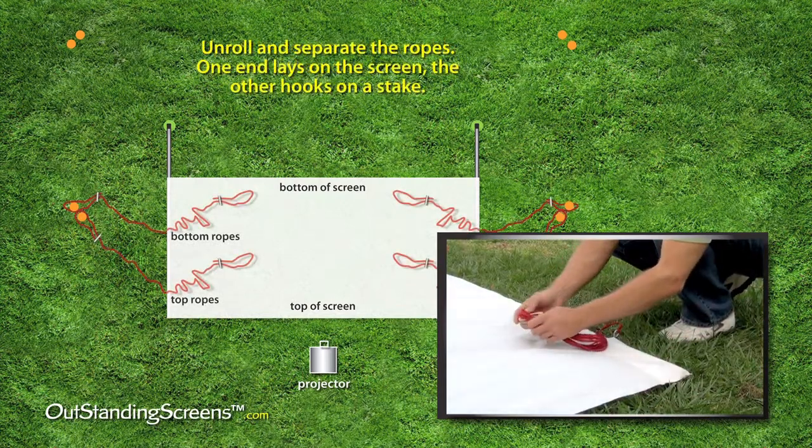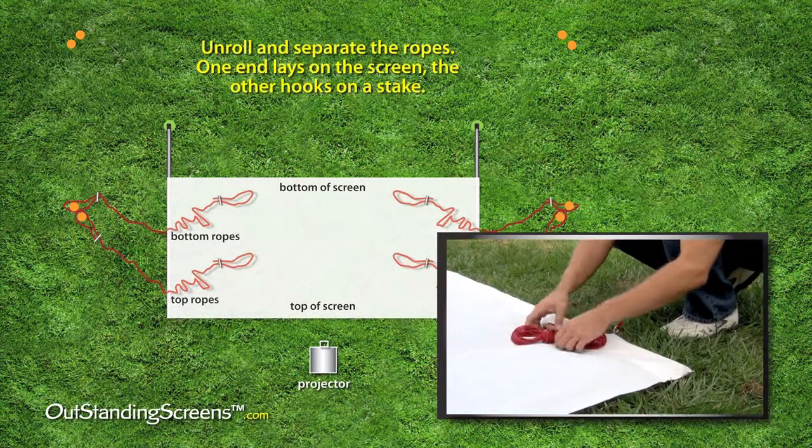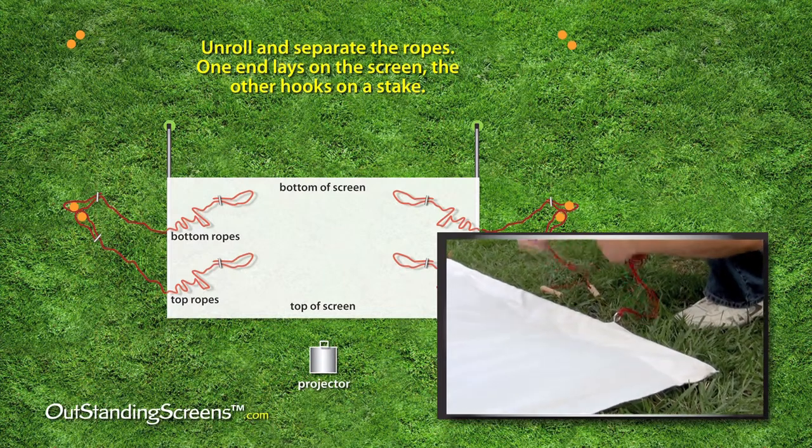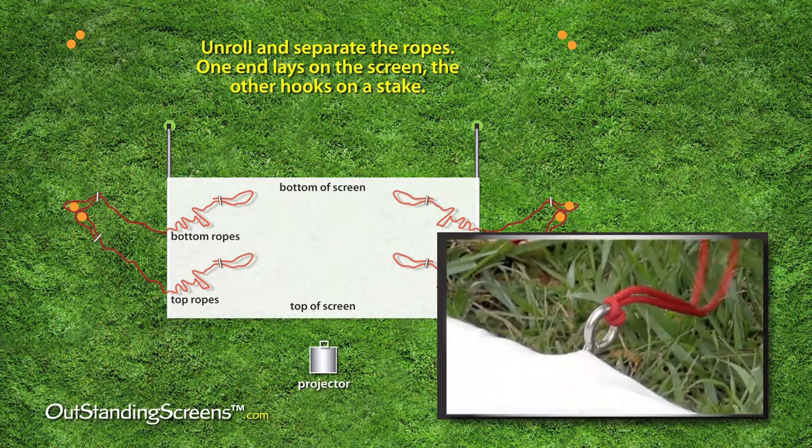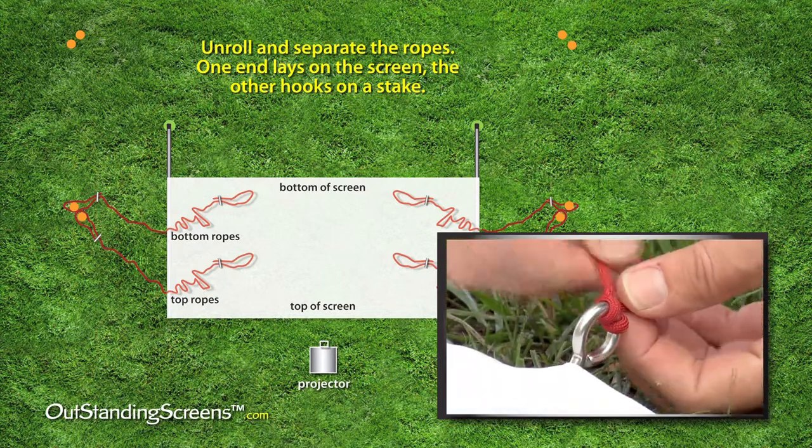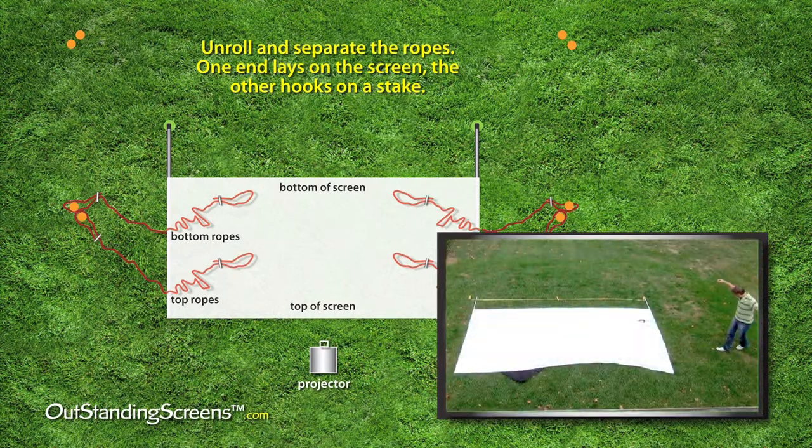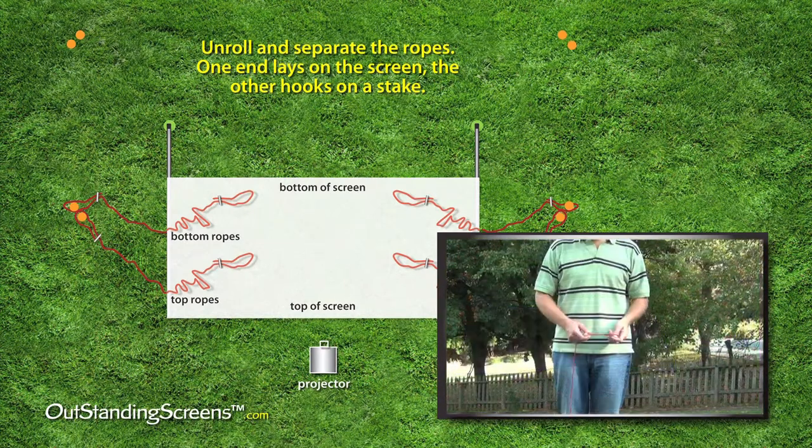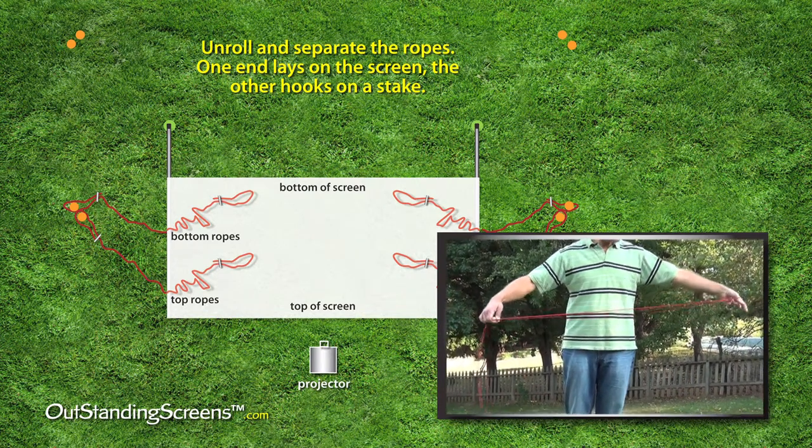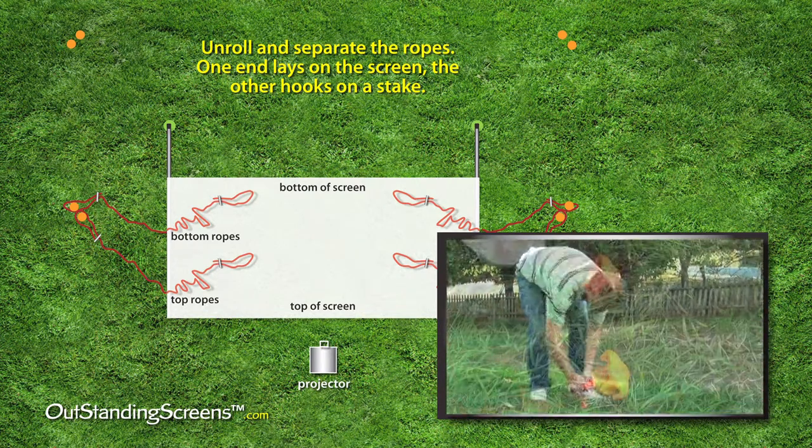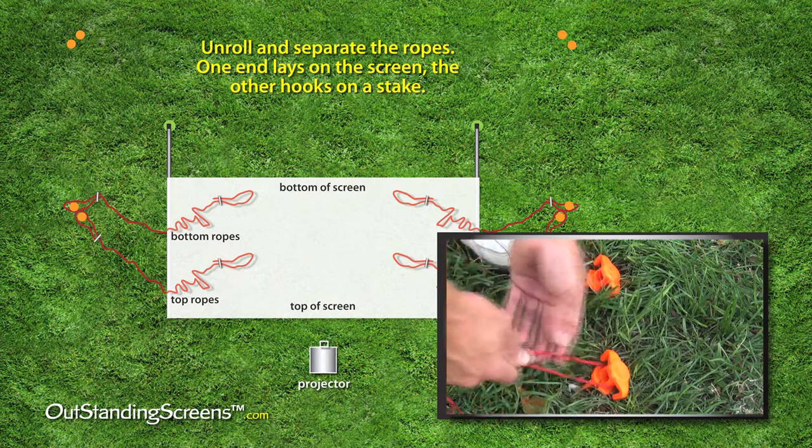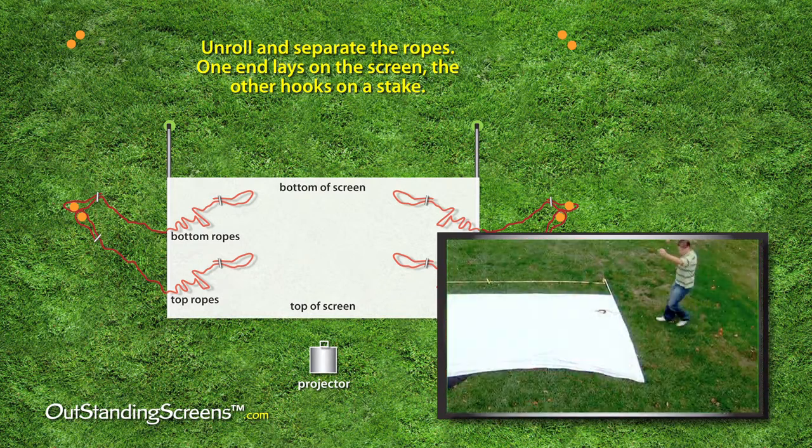Now, let's turn our attention to the ropes. To start, adjust the dowels to about arms width apart before you hook them on the stakes. One rope will go to the front stake and the other you can lay on the screen.